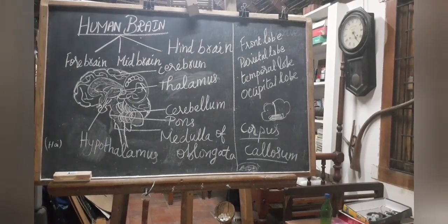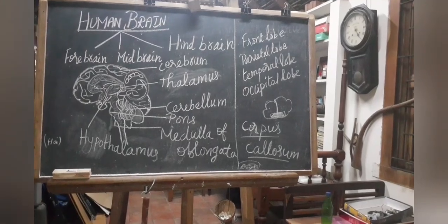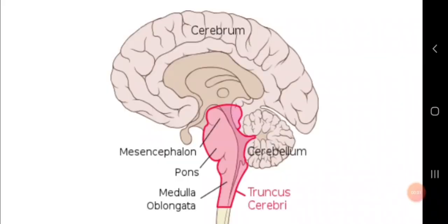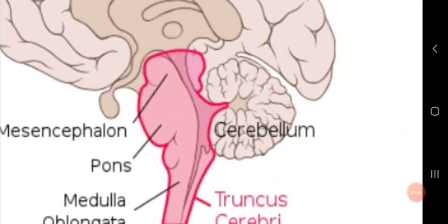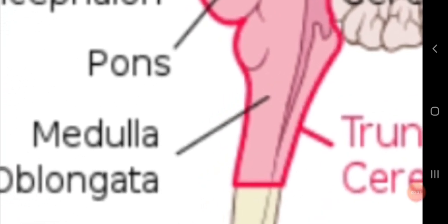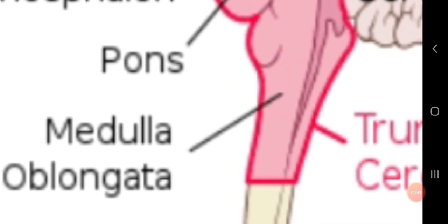The midbrain has four rounded bodies called corpora quadrigemina, which control visual and auditory responses. The cerebellum is the second largest part of the brain; it controls voluntary movements and maintains body balance. The pons, a Latin word meaning bridge, connects the lobes of the cerebellum and controls respiration and sleep cycle. The medulla oblongata is the posterior part of the brain; it connects the spinal cord to various parts of the brain and controls heartbeat, respiration and contraction of blood vessels.